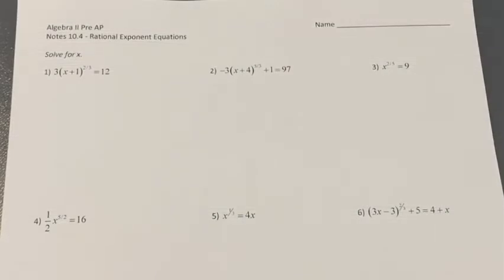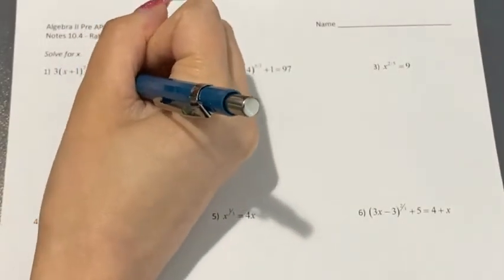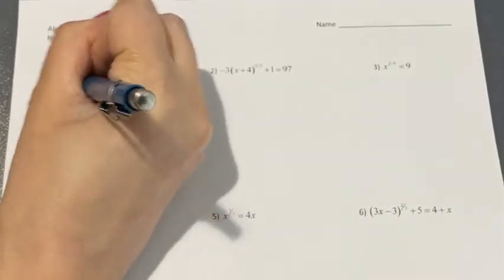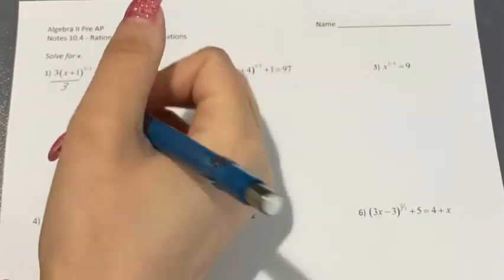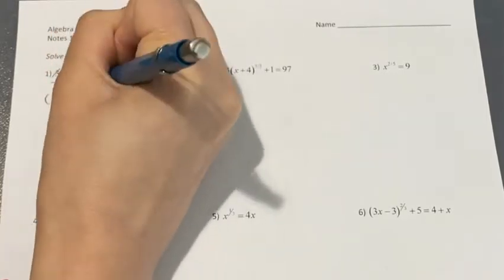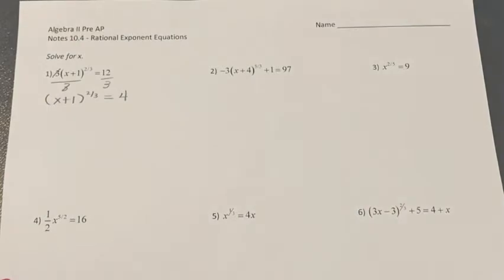Today we're going to learn how to solve rational exponent equations. The first thing you want to do is leave the part with the rational exponent by itself. In this situation, divide both sides by three, so you cancel the three and have x plus one to the power of two over three equal to four.